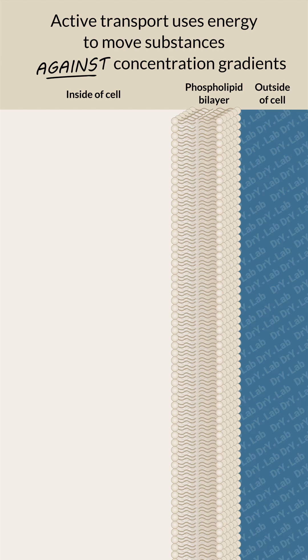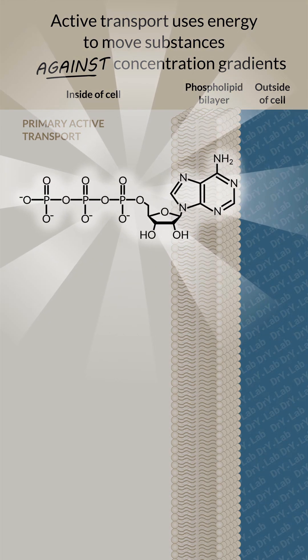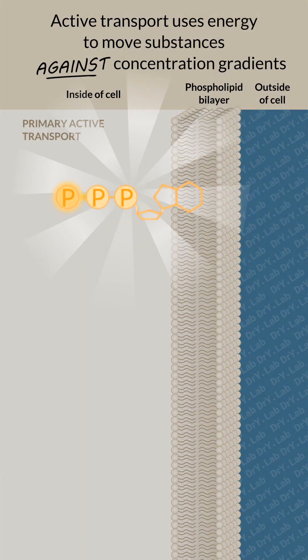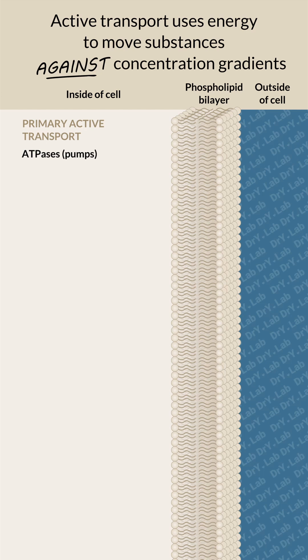Active transport uses energy to move substances against concentration gradients. Primary active transport uses energy directly. Adenosine triphosphate, ATP, is a source of energy for changing the shape of the protein to move solutes in the desired direction.